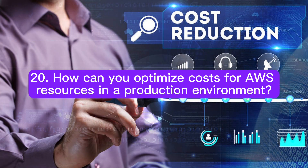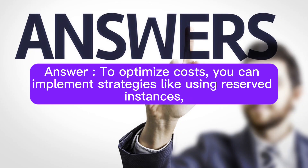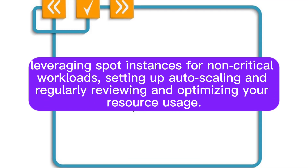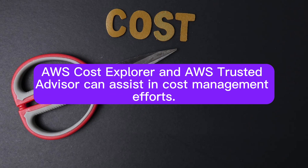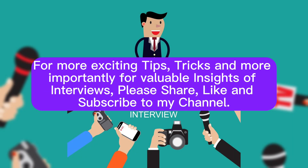Question 20: How can you optimize costs for AWS resources in a production environment? To optimize costs, you can implement strategies like using reserved instances, leveraging spot instances for non-critical workloads, setting up auto-scaling, and regularly reviewing and optimizing your resource usage. AWS Cost Explorer and AWS Trusted Advisor can assist in cost management efforts.